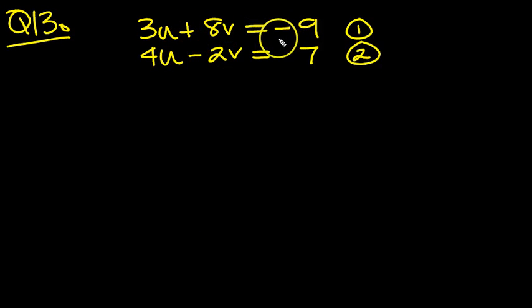3u plus 8v equals minus 9, and 4u minus 2v equals 7. So scale this up by 4, because they're opposite signs, and one of these and four of those, the v's will then cancel.